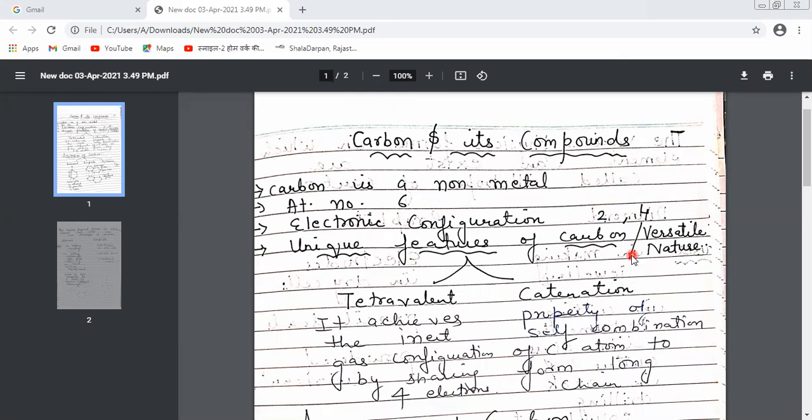The first unique feature is that carbon is tetravalent in nature. It has four electrons in its outer shell, so it gains four electrons to achieve inert gas configuration by sharing these electrons.